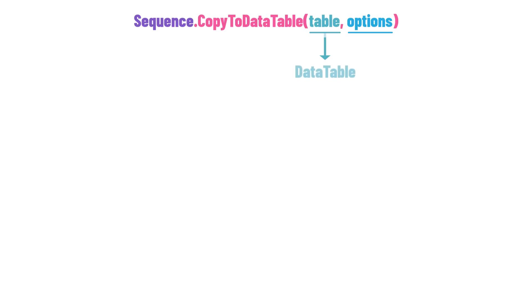The second overload has two parameters: the first is the DataTable where we want to copy the data, and the second is the load option, which determines how the data gets copied. What's happening here is that we are directly storing the data into a variable within the method itself. As a result, the method doesn't return a separate value. This absence of a return value means we can't use this overload in an Assign activity.